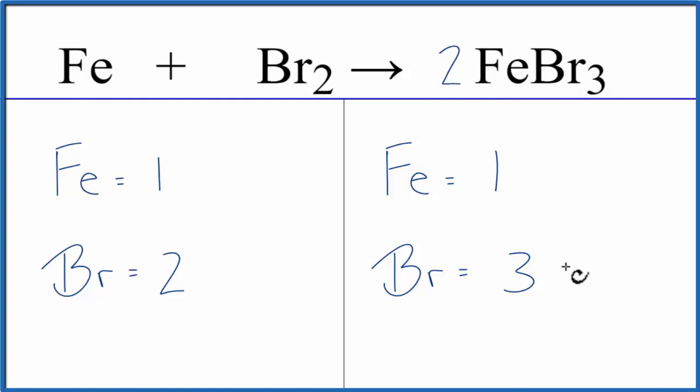So 3 times 2, that gives us 6, and this 2 applies to everything. So 1 times 2, that gives us 2. So now that this is an even number, I've got 6 here and 2 here.